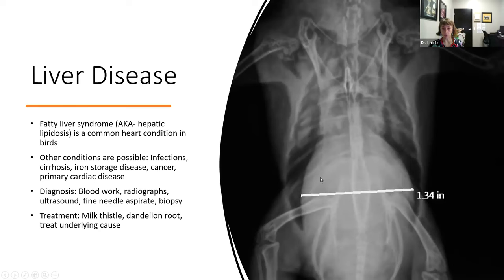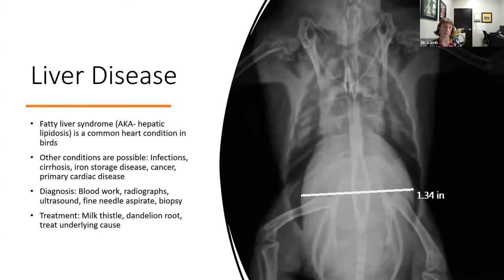There are other liver conditions too — infections, cirrhosis, iron storage disease, cancers, and even primary cardiac disease can cause secondary liver problems through fluid congestion. To diagnose liver problems, we run blood work to look at liver enzymes and bile acids, which is the most sensitive indicator of liver function. We also look at fat levels and other values. Radiographs and ultrasound are helpful as well — ultrasound can show whether the liver looks abnormal, fatty, or nodular.